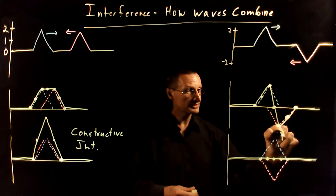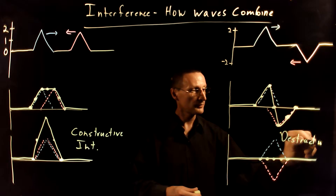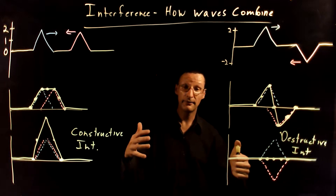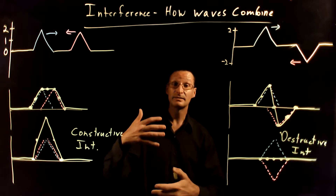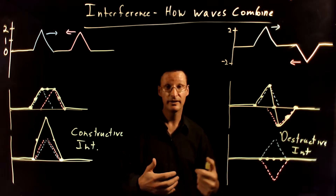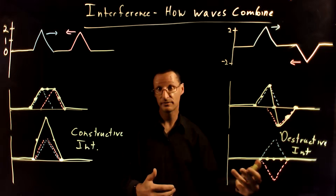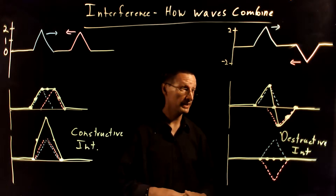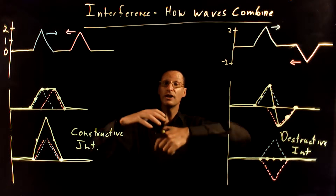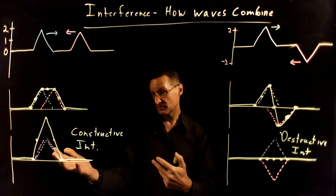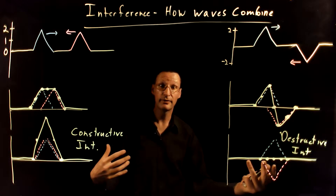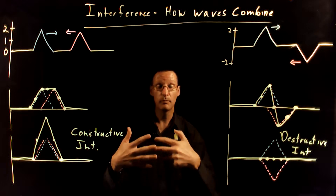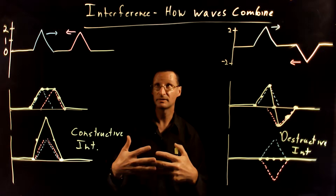We call this destructive interference. The overall shape of the string is flat. Destructive interference is when you combine two waves and the overall effect is smaller than either of the two original waves. In this case, it's total destructive interference, so it completely destroys the effect of the wave. Overall, you can combine two waves together and get constructive interference, destructive interference, or some other complicated thing in between. But any time you combine two waves, you just add them point by point according to the principle of superposition, and in that case we say the two waves are interfering.